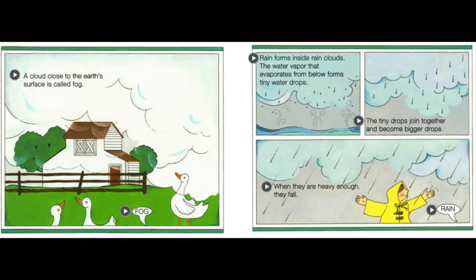A cloud close to the earth's surface is called fog. Rain forms inside rain clouds. The water vapor that evaporates from below forms tiny water drops. The tiny drops join together and become bigger drops. When they are heavy enough, they fall as rain.